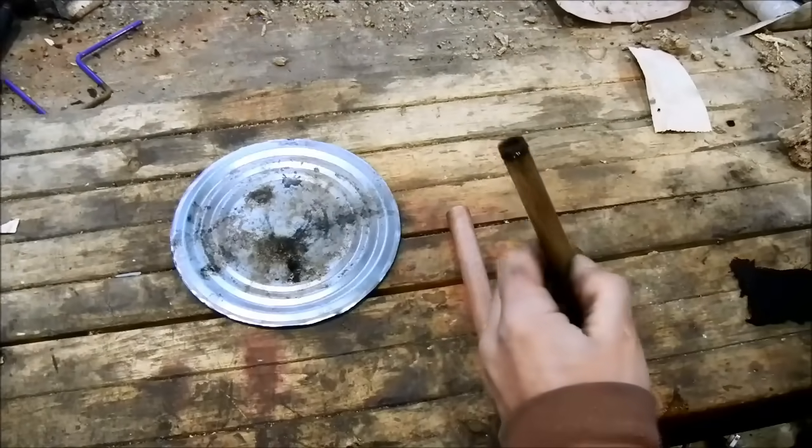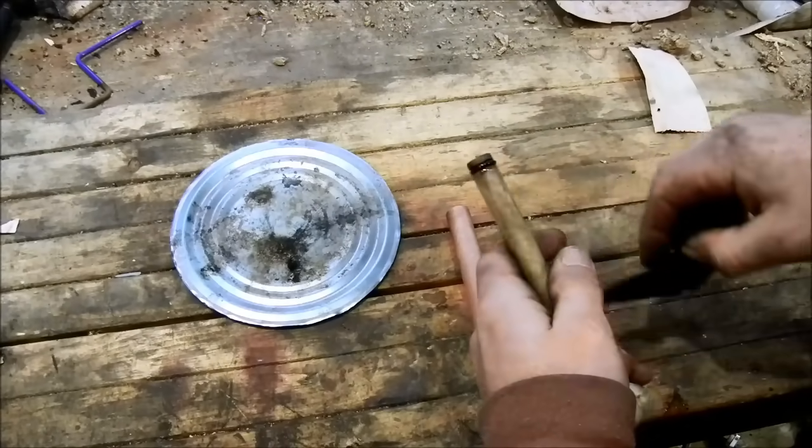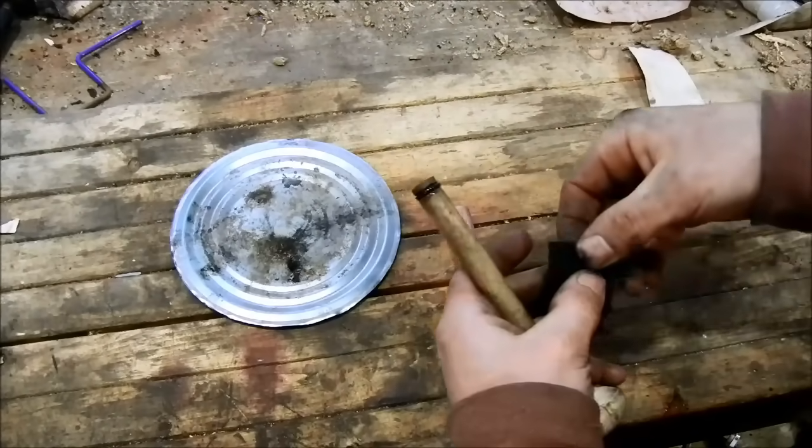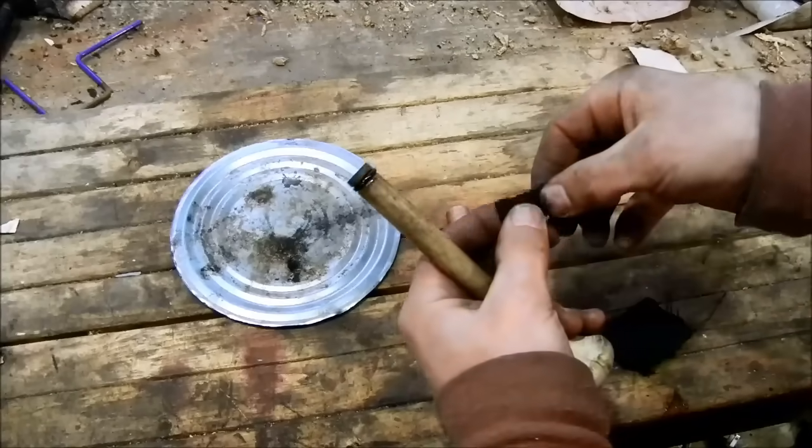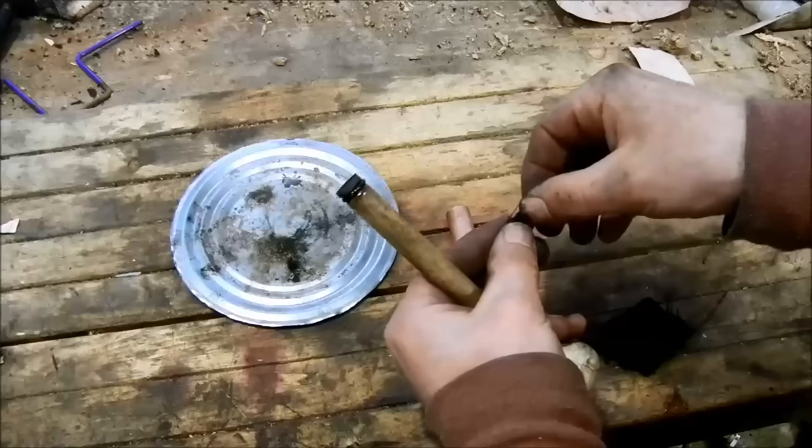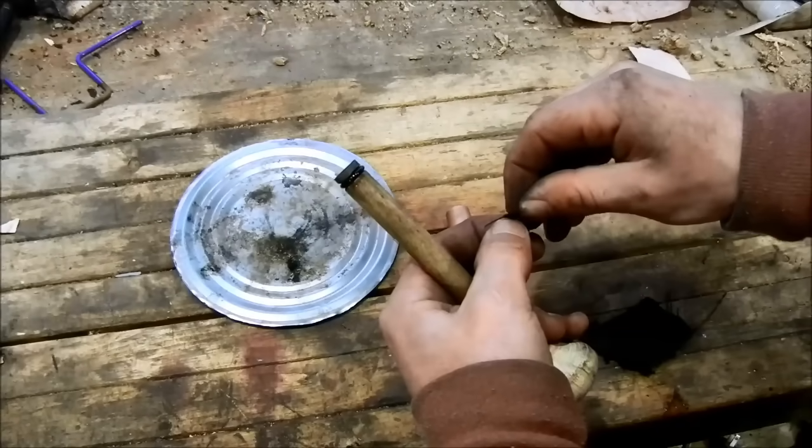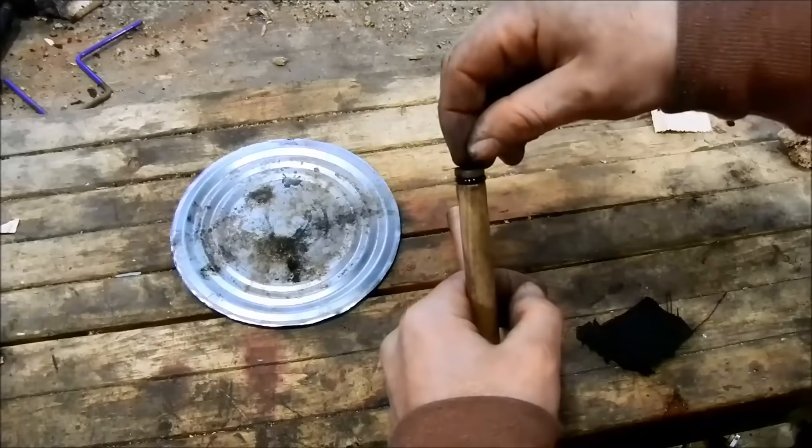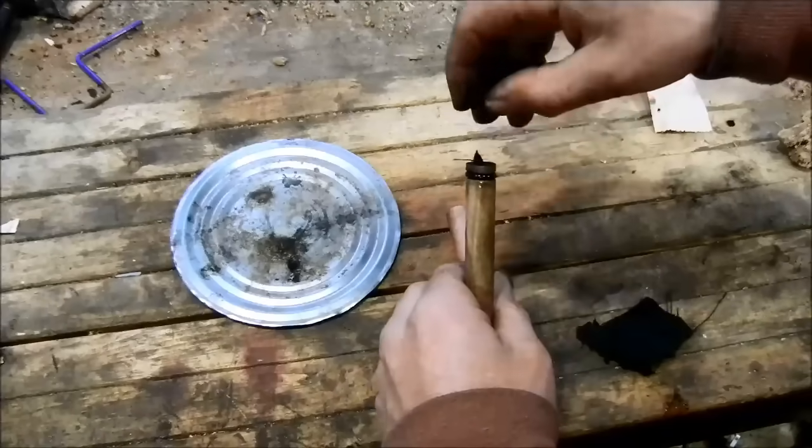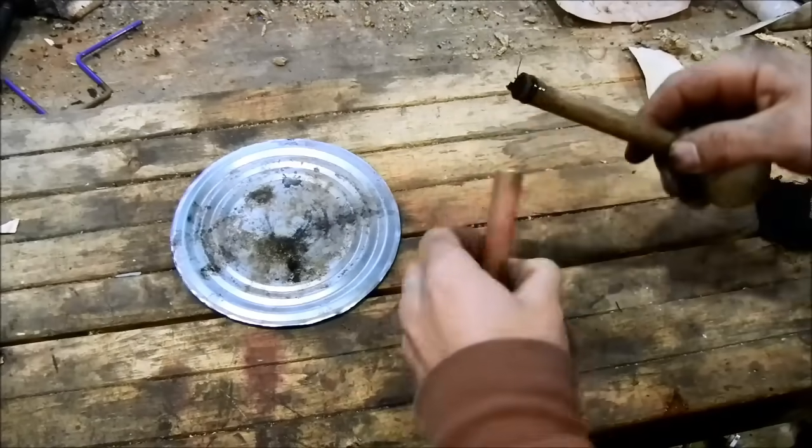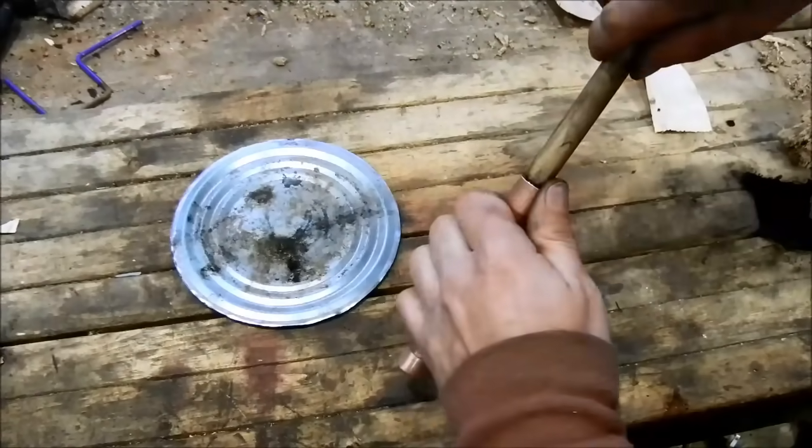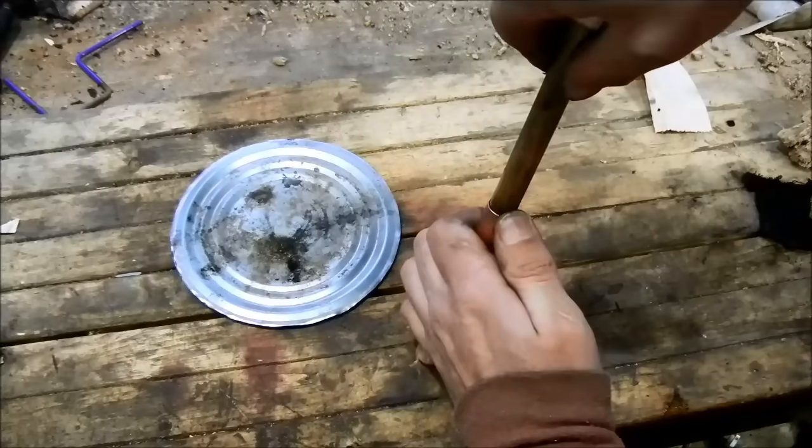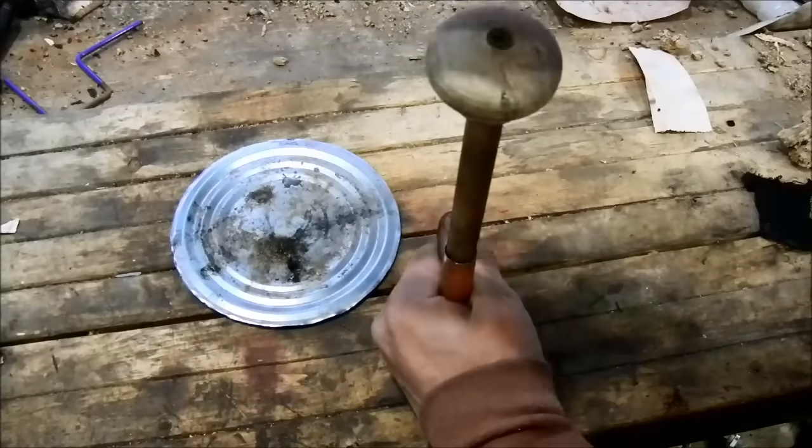Now I am going to demonstrate making a fire with this fire piston. As you see I have put a little bit of oil on it. Now we take a piece of char cloth and fold it and put it in the end. Now we insert it just a little bit into the cylinder and hit it as hard as we can.